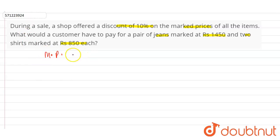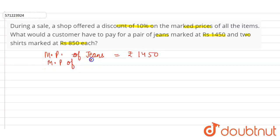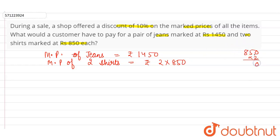The marked price of one shirt is 850, so the marked price of two shirts will be 2 into 850. Let's calculate: 2 into 850 — 2 into 0 is 0, 2 into 5 is 10, carry 1; 2 into 8 is 16, plus 1 is 17. So the marked price of two shirts is rupees 1700.